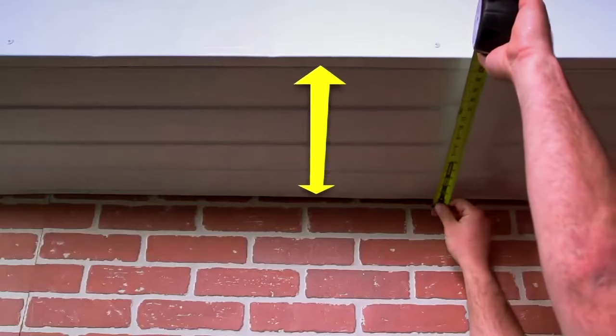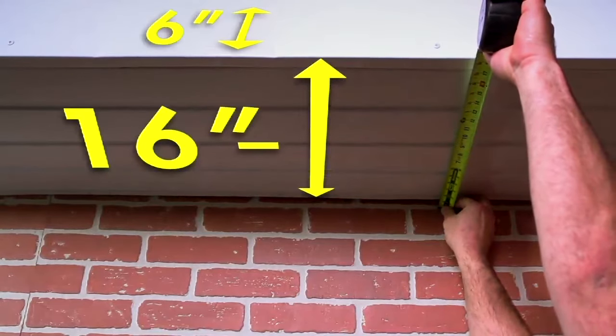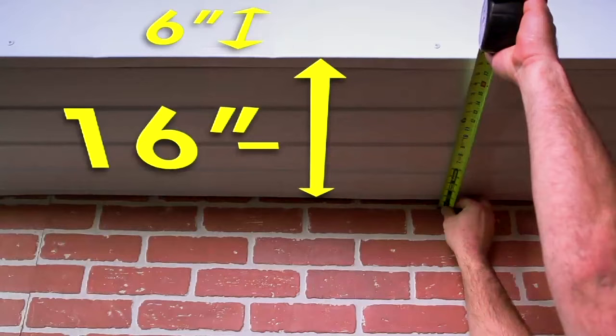This product is for use on soffit panels at least 16 inches wide with a vertical clearance of at least 6 inches high. Please ensure that before beginning installation, the soffit area is free of insulation and debris.